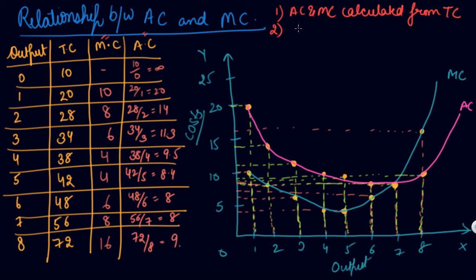Second relationship: when AC falls, MC is lower than AC. See your AC curve is falling from here. Your MC curve is also falling but it is lower. So your AC is falling, your MC is lower than AC.